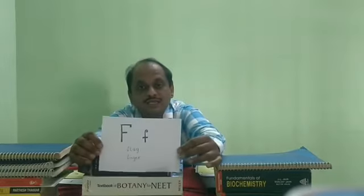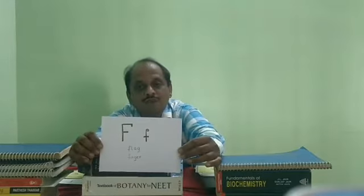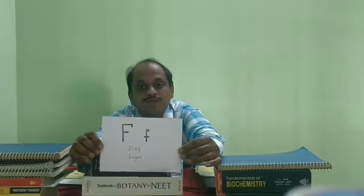Then we have F — capital letter F and small F. The phonic sound is F. Examples: flag and finger. Say with me: flag and finger.